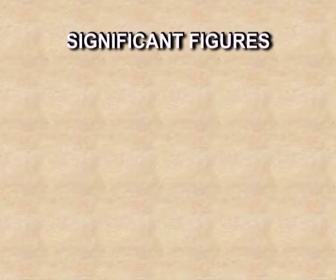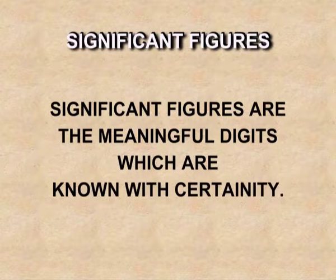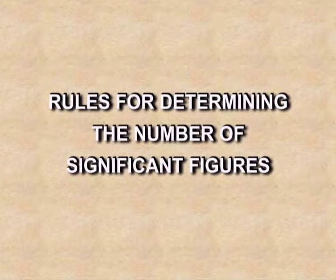Significant figures are the meaningful digits which are known with certainty. Whenever we measure, the last digit is always uncertain with an uncertainty of ±1. For example, if the volume is 14.2 ml, then 14 is certain but 2 is uncertain. There are a few rules we have to follow while writing significant figures.